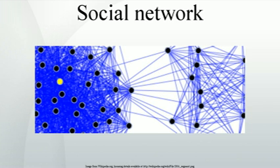Levels of analysis: In general, social networks are self-organizing, emergent, and complex, such that a globally coherent pattern appears from the local interaction of the elements that make up the system. These patterns become more apparent as network size increases.